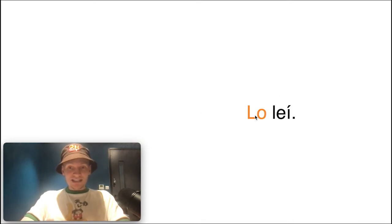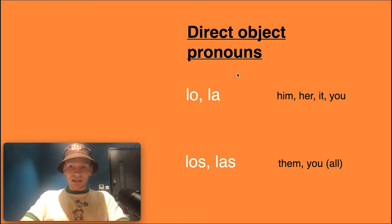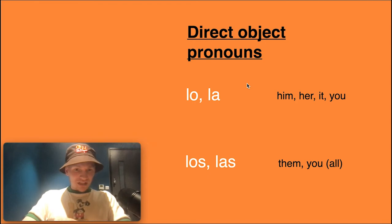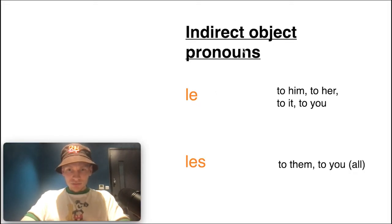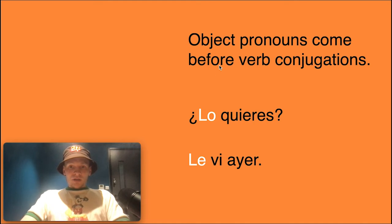So: lo leí — 'I read it' in the preterite tense. How did we get to lo? Let's go back to our tables. I'm looking for 'it.' El libro is masculine, so it's going to be lo. Checking the indirect object pronouns — those are 'to him/her/it,' and I didn't read to it, I read it — so lo is correct.